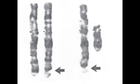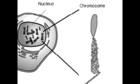Chromosomes are inside what? And are only visible when? Chromosomes are inside the nucleus of a cell, and they are only visible during mitosis, or cell division.